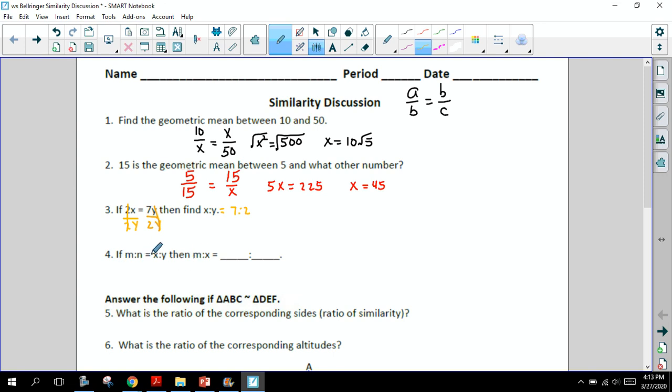On the next one, number four, they give you this proportion of m over n equals x over y. And in the end, they want us to have it, they want to know what m over x would equal. So whenever you have a proportion, a good way to start is take the product, the means, that equal the product, the extremes or the means would be the n times the x. So let's go ahead and do that. nx is equal to the product of the extremes there, which would be m times y.